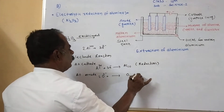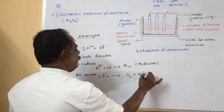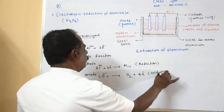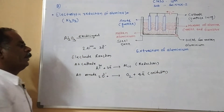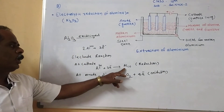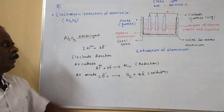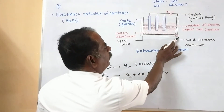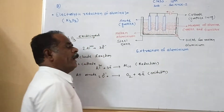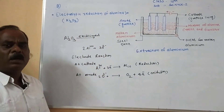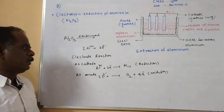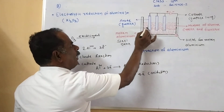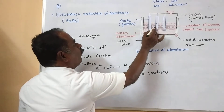Oxidation takes place at the anode and oxygen is liberated, while aluminium is deposited at the bottom at the cathode. Take this molten aluminium from the outlet and collect it in a separate tank. At high temperature, the oxygen liberated at the anode reacts with the graphite rod.